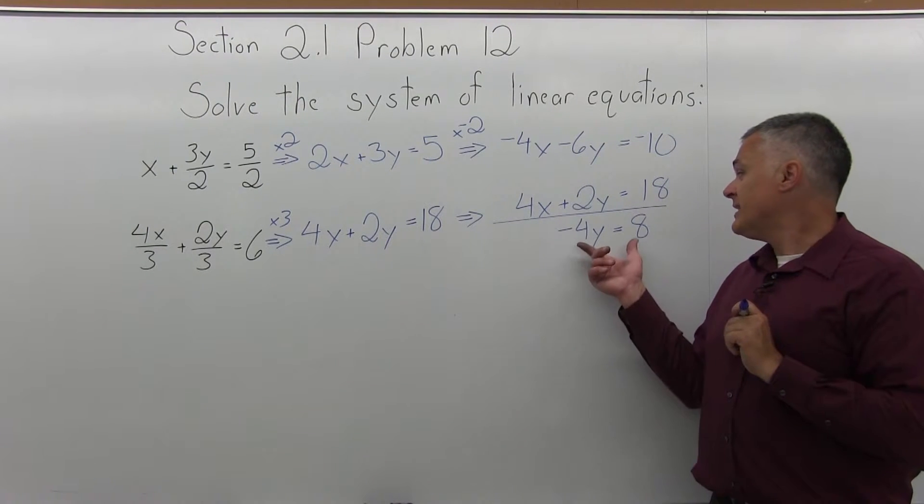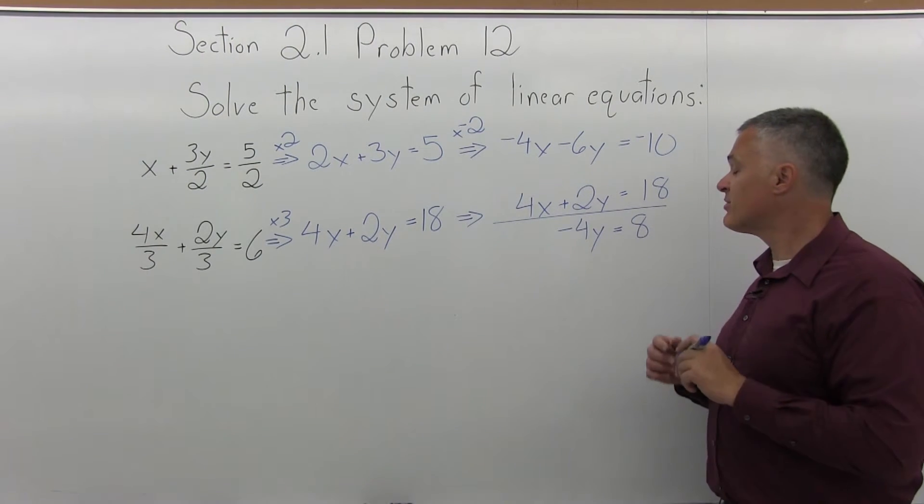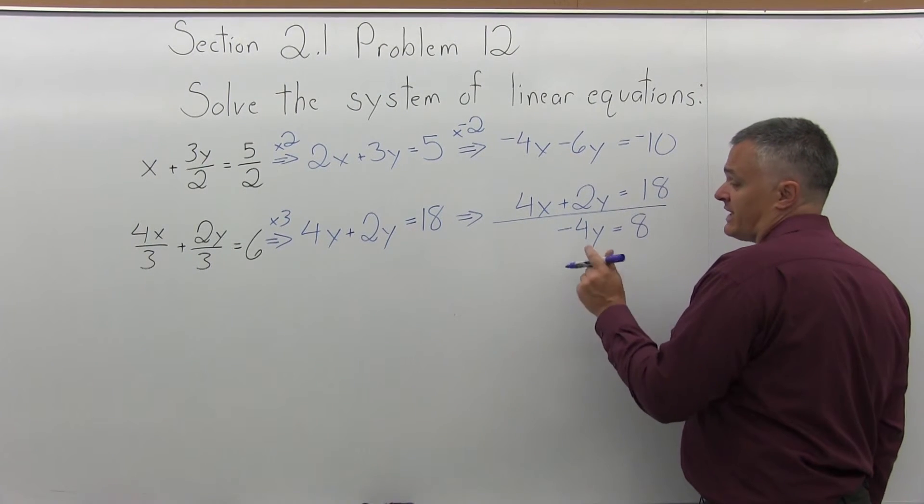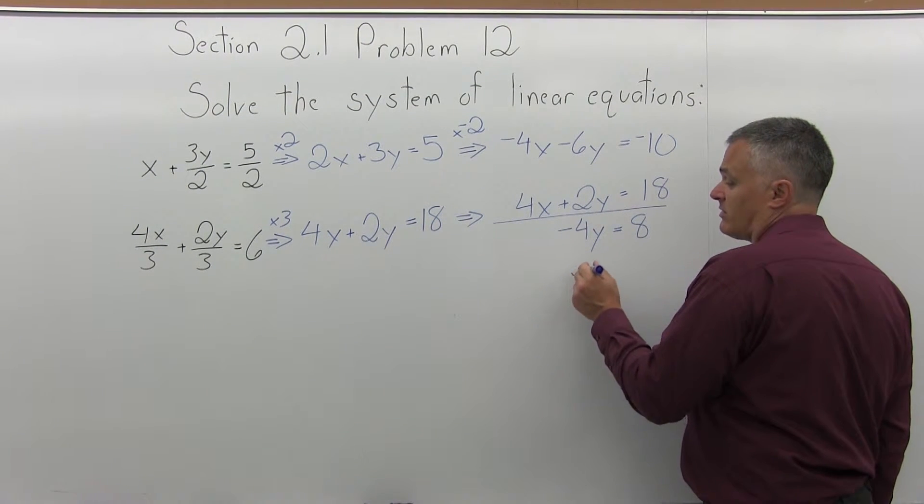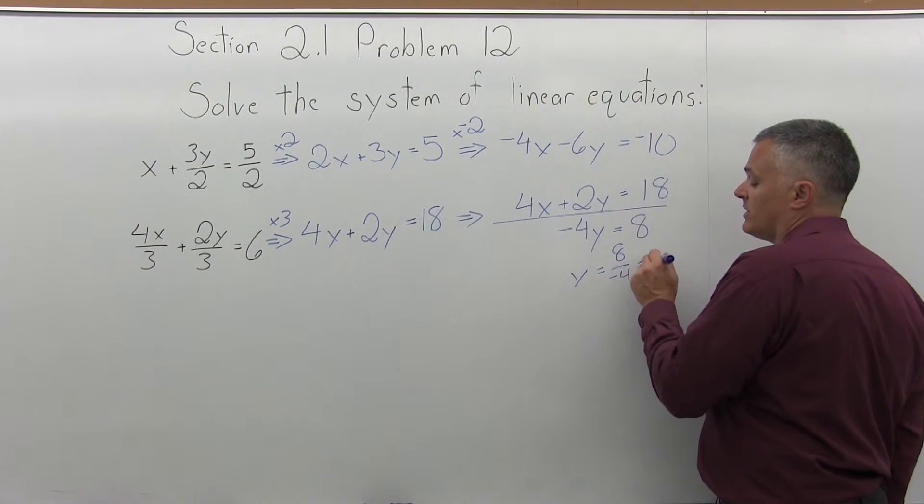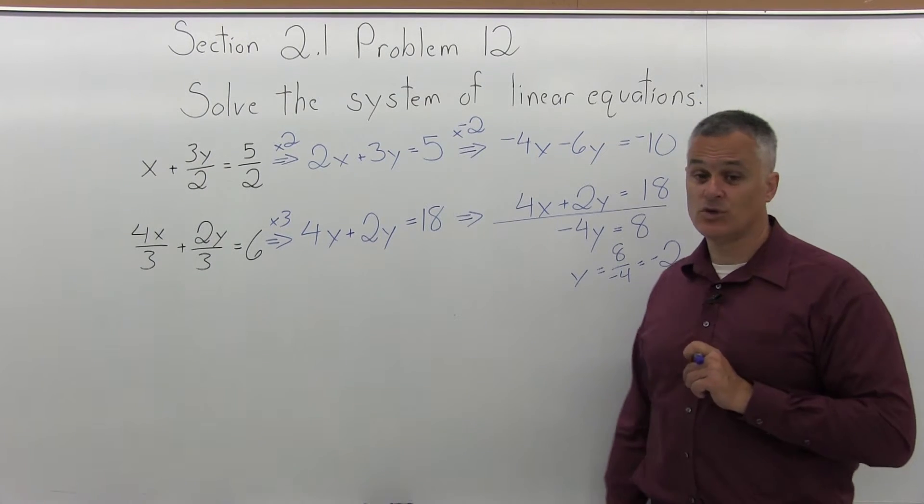So now that's step 2. I added the equations together to cancel one of my variables. Step 3 is solve for the remaining variable. So if I have negative 4y equals 8, divide out the negative 4. y equals 8 divide by negative 4 will give me y is negative 2. Don't lose the negative.